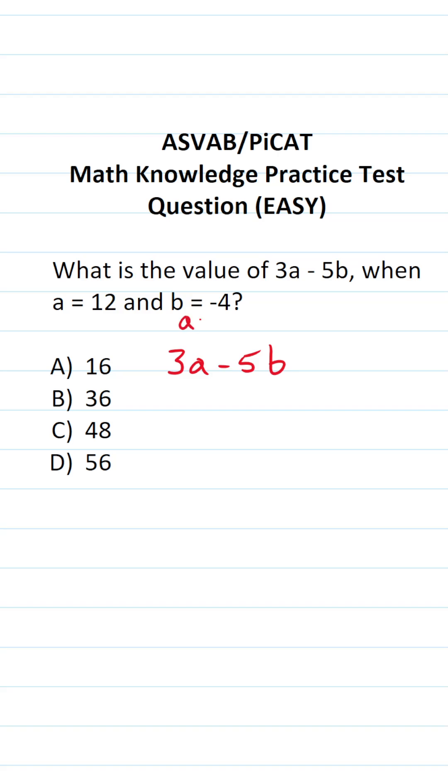In this case, we want to evaluate the expression 3a minus 5b when a is 12 and b is negative 4. So the first thing we're going to do is plug in those values respectively.